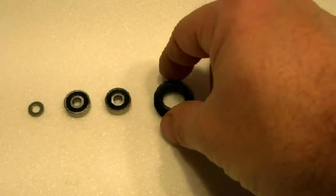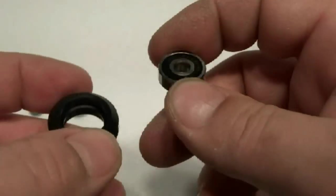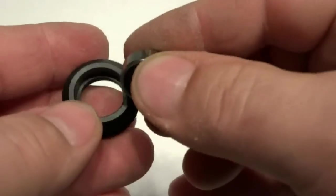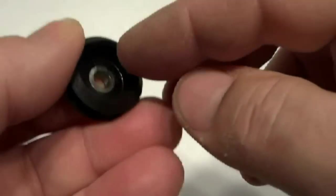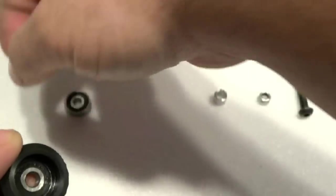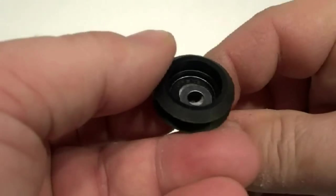Step one is going to be to install the bearings into the Delron Dual V Wheel Sleeve. Take your spacer, put that in, slide the bolt through the bottom.